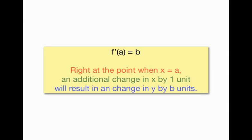So if right at the point when x equals a, if I change x by one unit, I can expect a change in the output, a rise, or maybe a drop, by b units. Let's take a look at a couple of examples where this makes this very precise.